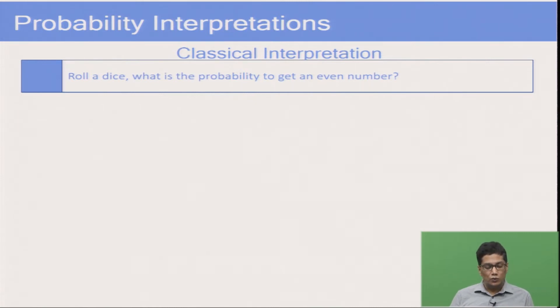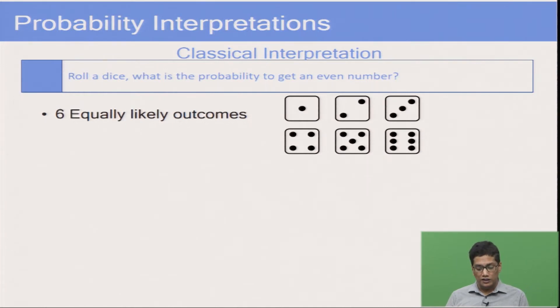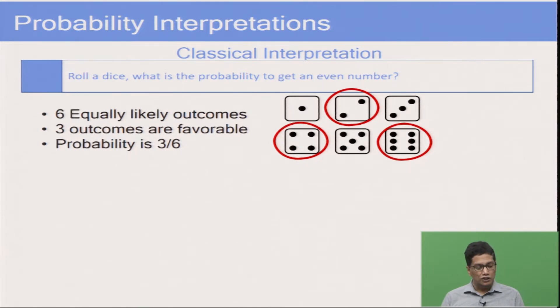The dice has 6 faces: you get 1, 2, 3, 4, 5, or 6, and all outcomes are equally probable. The outcomes favourable to getting an even number are 2, 4, and 6 — three favourable outcomes. So the probability would be 3 by 6, since 3 is the number of favourable outcomes and 6 is the total number of outcomes. This is generally the way probability is classically interpreted: you find equally probable outcomes and each individual outcome has probability 1 divided by the total number of outcomes.